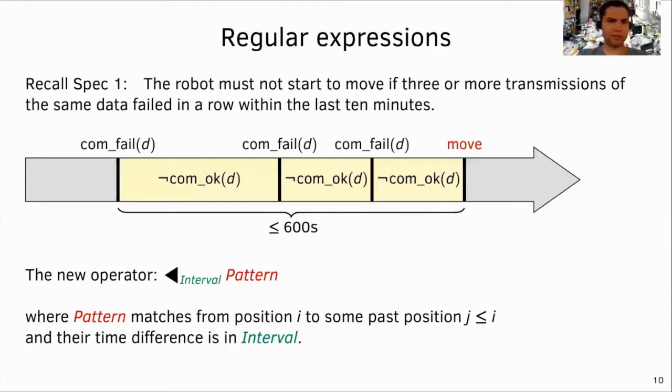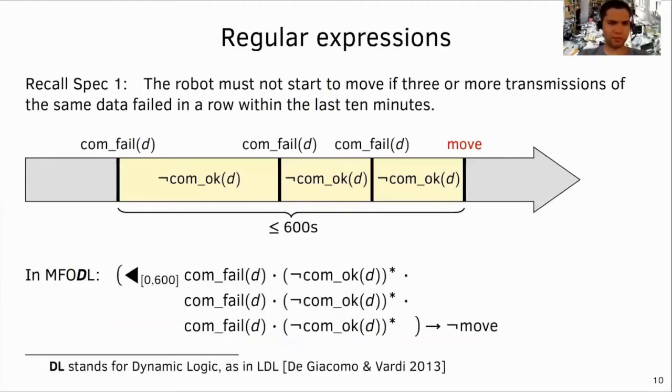Okay. This is great. Let me try to formalize the first policy now. So, here I'm writing a regular expression for the pattern of three failures, each followed by arbitrary events where the transmission does not succeed. And then I wrapped the regular expression in a single past match operator that enforces the metric constraint. The nice thing about this formula is that it needs only one temporal construct and is therefore much smaller than the encoding in mFODL. Let's call this language with the new operator mFODL, with DL standing for dynamic logic like in linear dynamic logic proposed by De Giacomo and Vardi in 2013.